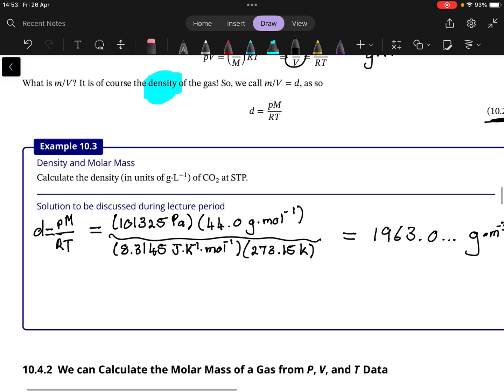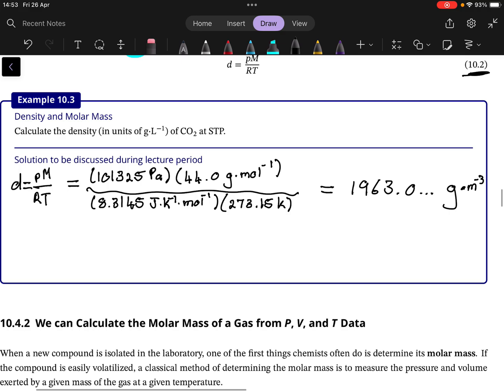So we need to take cubic meter to liter. So we have 1963.0 and some numbers which we currently have a unit of gram per cubic meter. So what do we want to get rid of? We want to get rid of cubic meter and multiply by 1 cubic meter per 1000 liter.